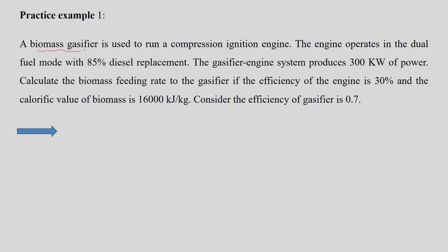The first example: a biomass gasifier is used to run a compression ignition engine. The purpose of this gasifier is that the produced gas is used to run the compression ignition engine, and the engine operates in dual fuel mode. That means it operates using two fuels — one is diesel, and part of the operation is carried out using the gas produced from the gasifier. That is why it is called a dual fuel mode engine, and in this case 80% of the diesel replacement is done by the producer gas.